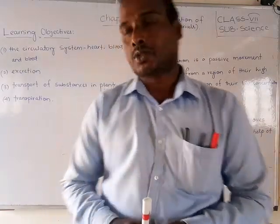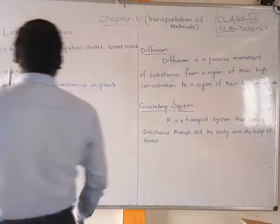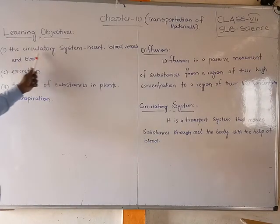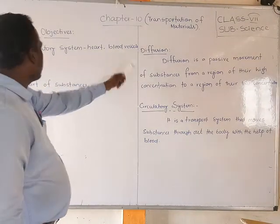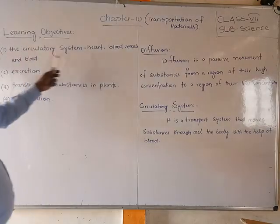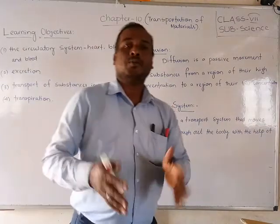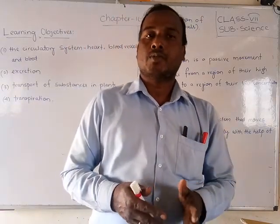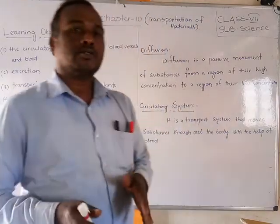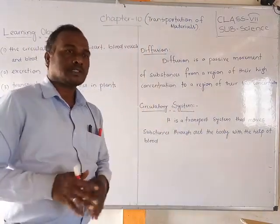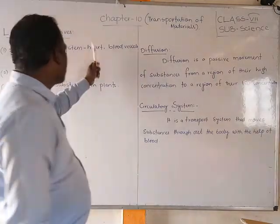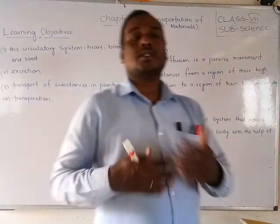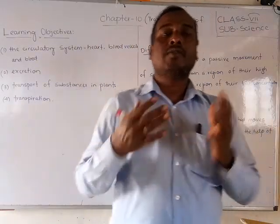Before we go to the chapter, let us look at the learning objectives. First, we will discuss the circulatory system — the heart, blood vessels, and how the heart is the main component of the circulatory system. Second, we will discuss excretion — the kidney — and how waste materials are removed from the body.